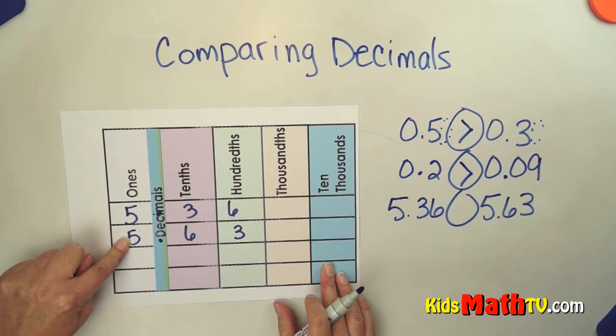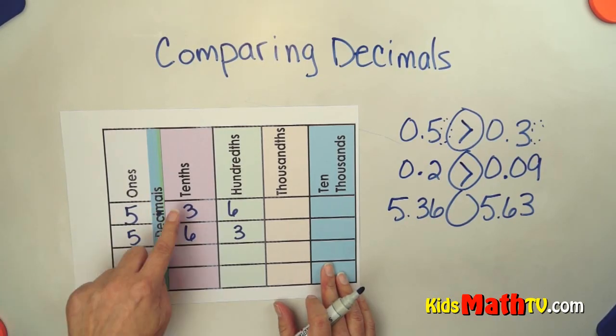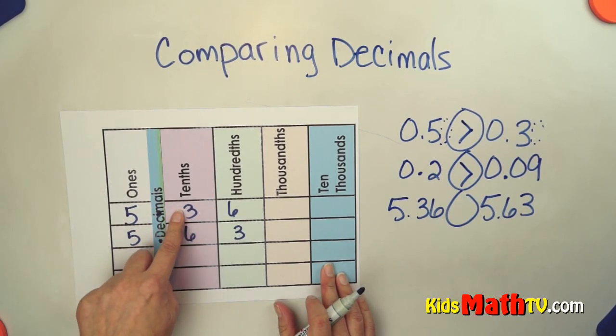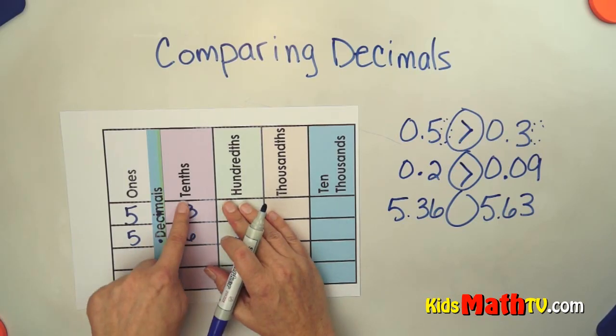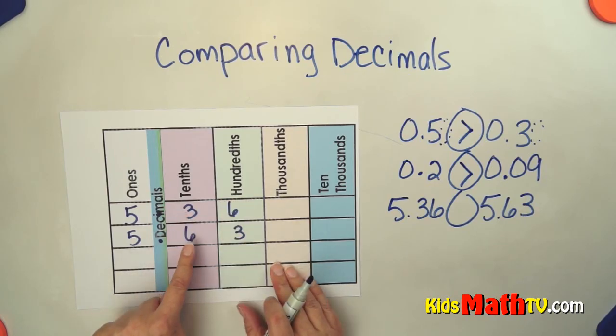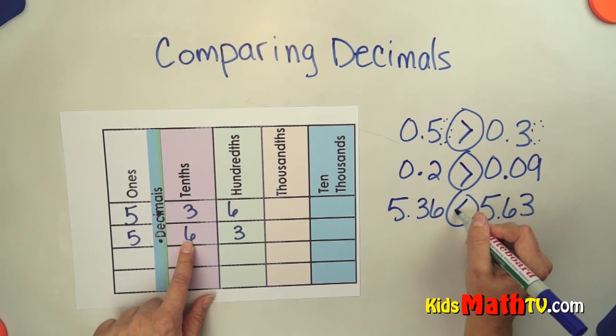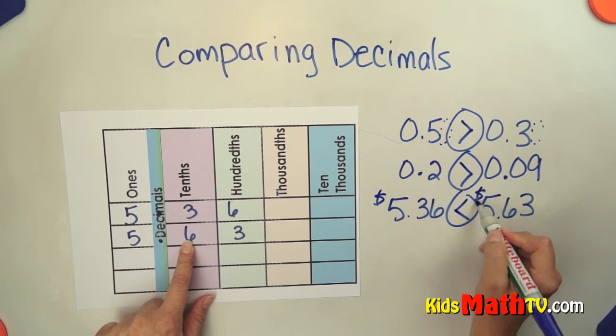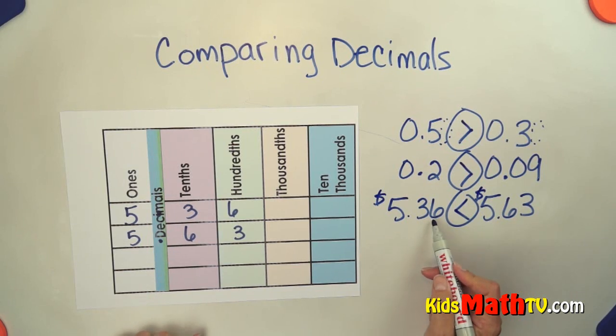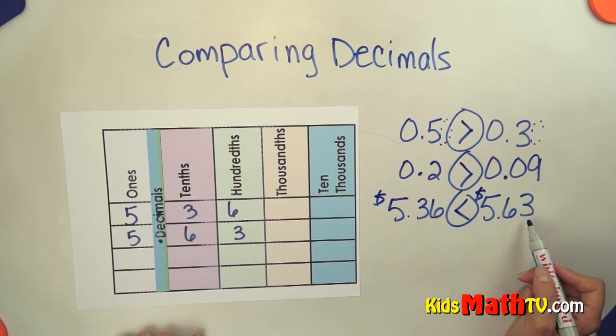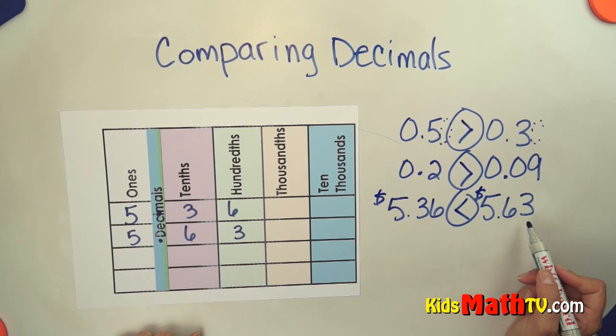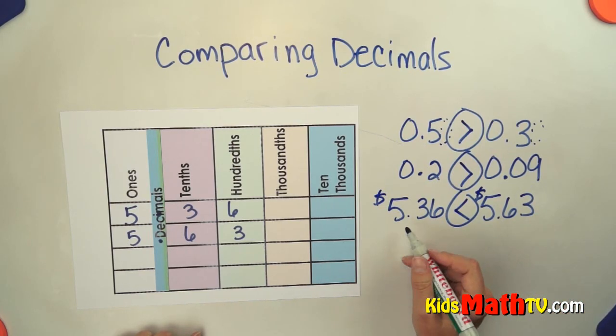The ones are the same, so that doesn't help us. We go to the tenths place. This is 3 tenths and this is 6 tenths. This is really as far as we need to look. 6 tenths is greater than 3 tenths, so 5.63 is greater than 5.36. And again, if you think of it as money, $5.36 is less than $5.63.